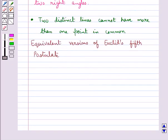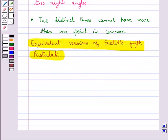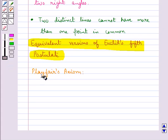Now we discuss equivalent versions of Euclid's fifth postulate. Euclid's fifth postulate is very significant in the history of mathematics. There are several equivalent versions of this postulate. One of them is Playfair's axiom,